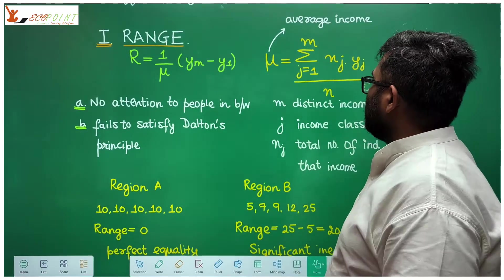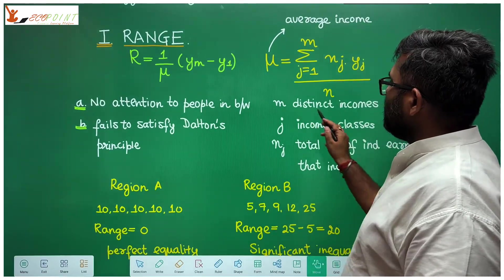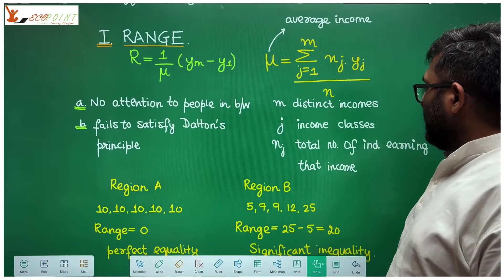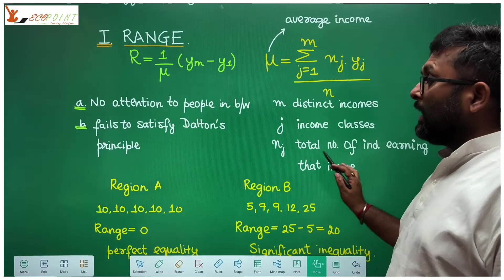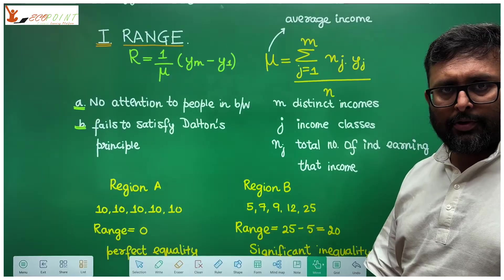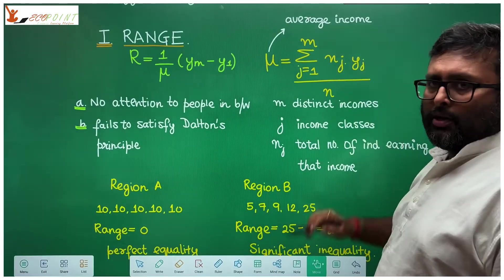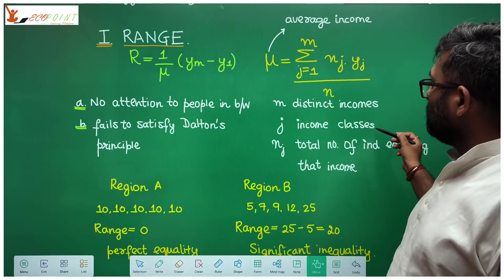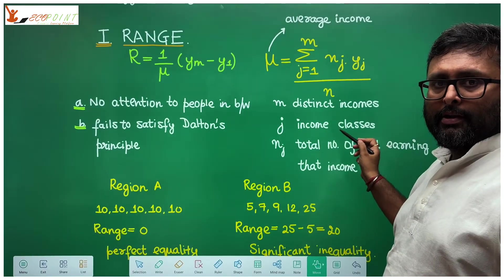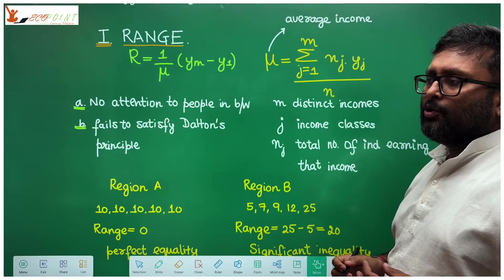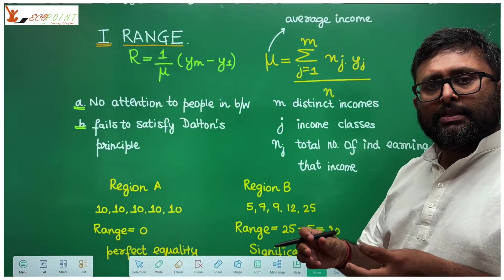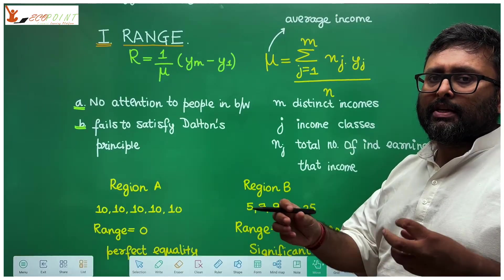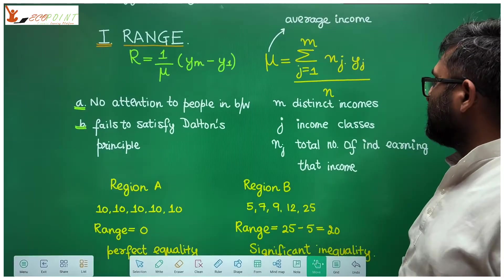So if you have the classes, if you have n distinct incomes which are given, j are the income classes, nj are the total number of individuals earning that income, then you have this formula. The total number of individuals earning that income into yj. Say, you have 10 individuals earning 500, 20 individuals earning 1000, 30 individuals earning 3000, something like this.